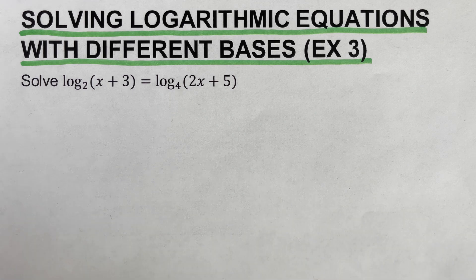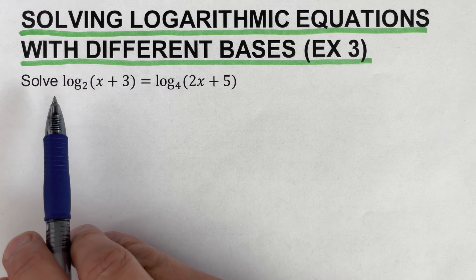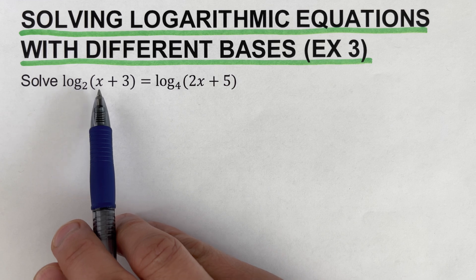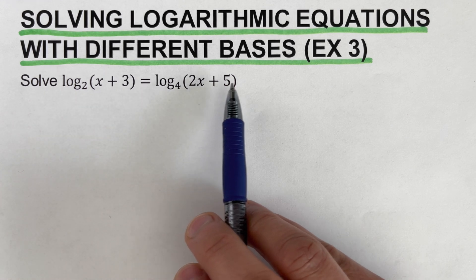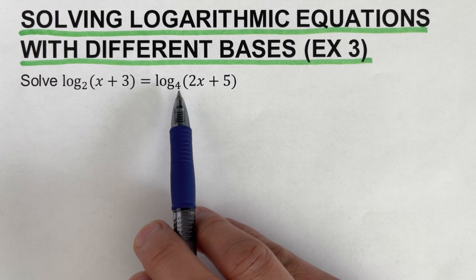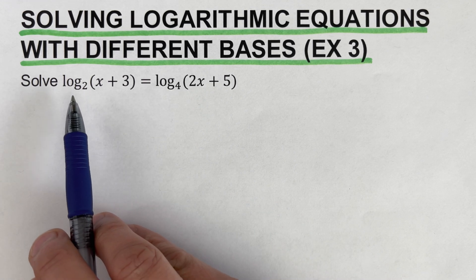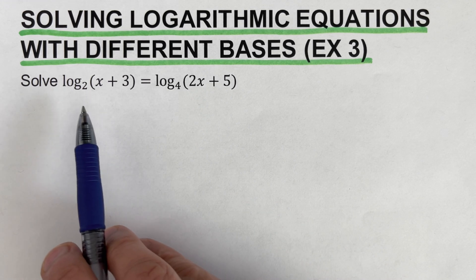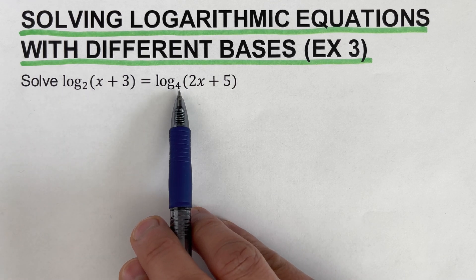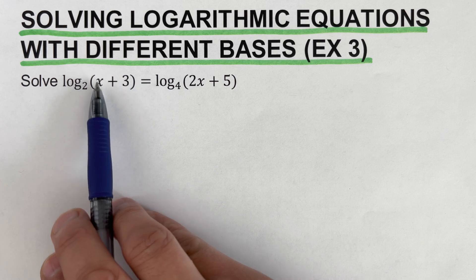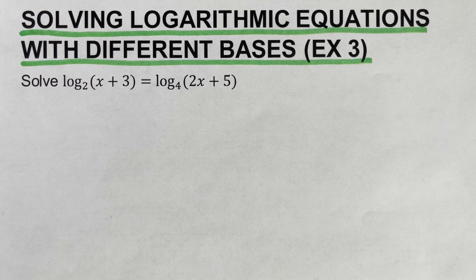Going back to the example, we are supposed to solve for x: log of (x + 3) to the base 2 equals log of (2x + 5) to the base 4. In this example we cannot use the equality rule since the two bases, 2 and 4, are not the same. So we cannot equate their arguments. The first thing we're going to do is make sure their bases are the same using the change of base formula.